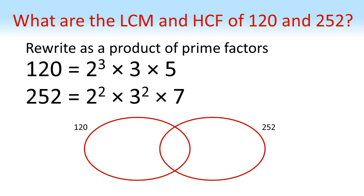In the Venn diagram, 120 has 2³ and 252 has 2², so they share two 2's — those go in the middle. Both also have a 3, so that goes in the middle too. What's left for 120 is a 2 and a 5, and what's left for 252 is a 3 and a 7.